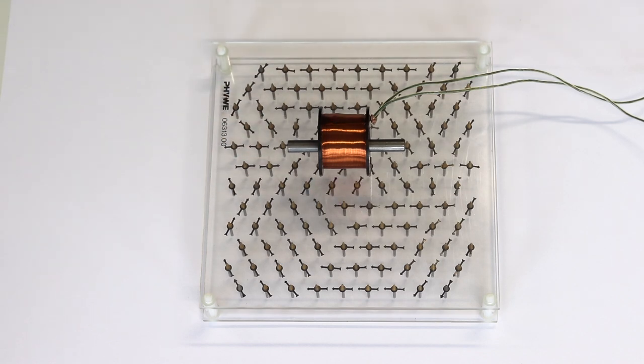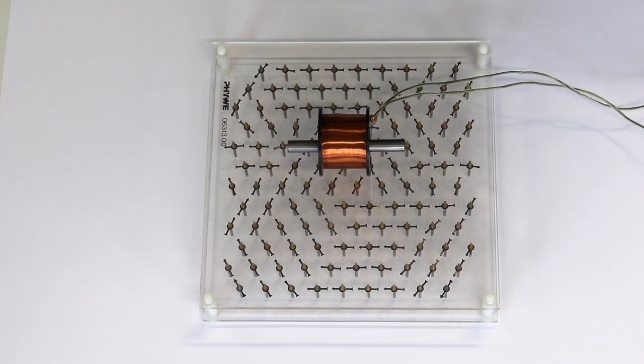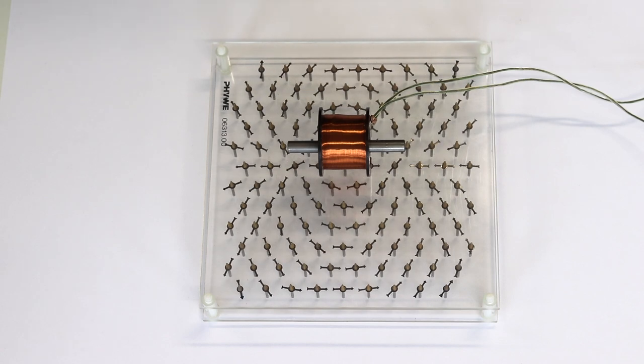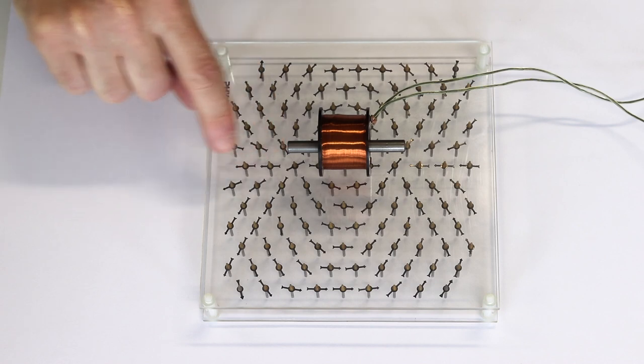I'm going to reverse the direction of the current in the coil from the power supply. We have a similar pattern but now the small compass needles are pointing away from this end of the coil.